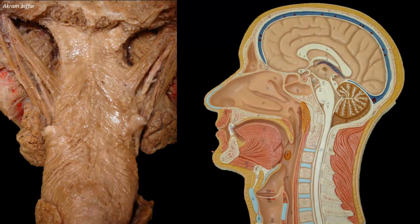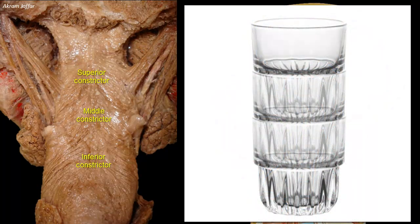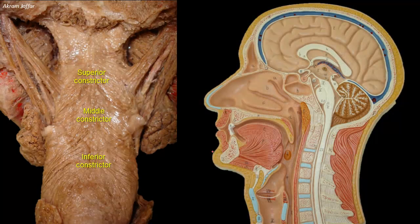The muscular layer of the pharynx is composed mainly of three constrictor muscles — superior, middle, and inferior — which overlap each other from below upwards like three stacked glasses. The muscles do not extend up to the base of the skull. The immovable wall of the nasopharynx at the base of the skull consists of the thick pharyngobasilar fascia, which makes a fourth cup stacked inside the other three, keeping the nasopharynx always open because of the thickness of the fascia and the absence of muscle fibers to contract.